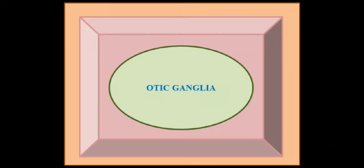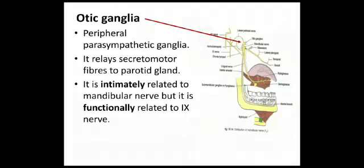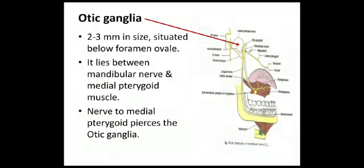The otic ganglion is a peripheral parasympathetic ganglion. It relays secretomotor fibres to the parotid gland. Although intimately related to the mandibular nerve, it is functionally related to the glossopharyngeal nerve. This ganglion is 2–3 mm in size, situated below the foramen ovale, and is wedged between the mandibular nerve and the medial pterygoid muscle. The nerve to medial pterygoid pierces the otic ganglion without relay.